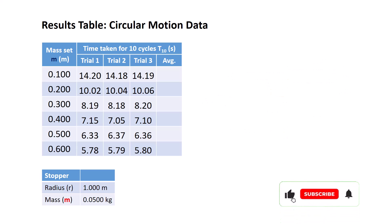In this particular table we have the time taken for 10 cycles: Trial 1, trial 2, trial 3 for the six different mass sets. And we need to work out the average of each for a start. A pretty easy calculation to make.